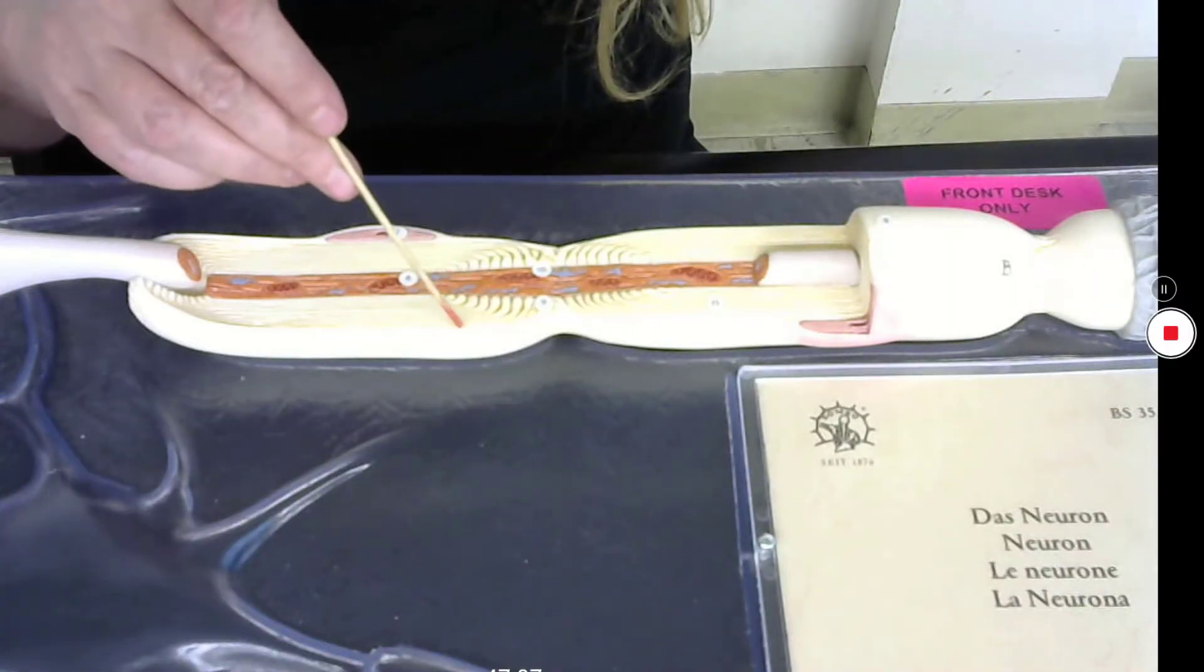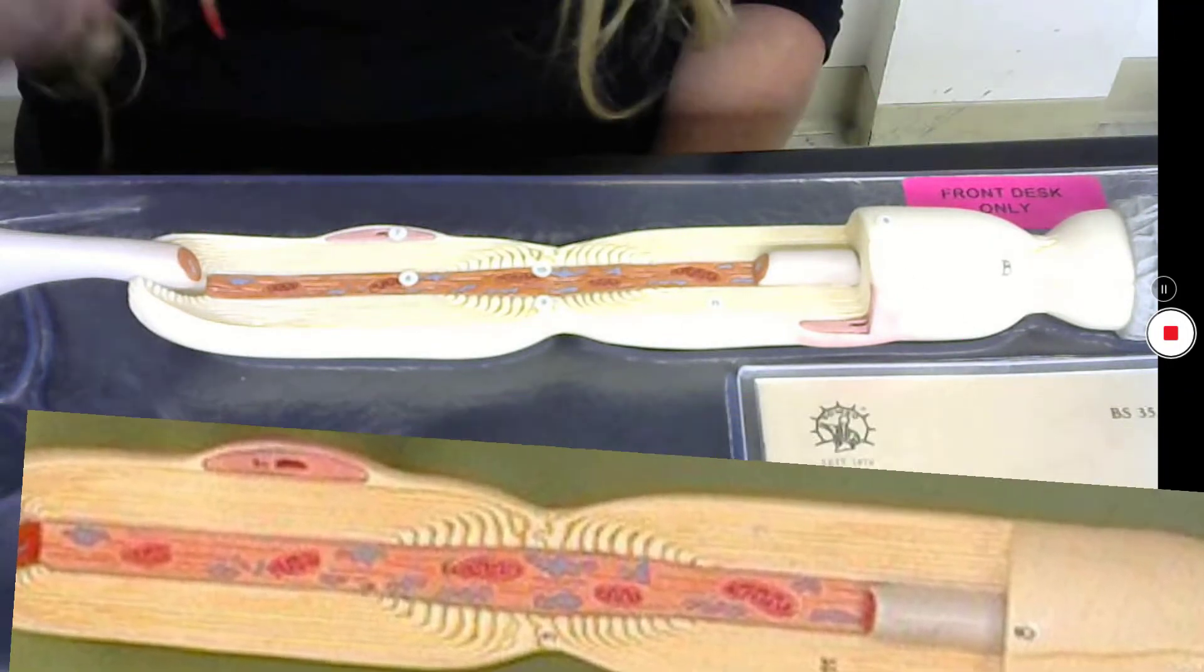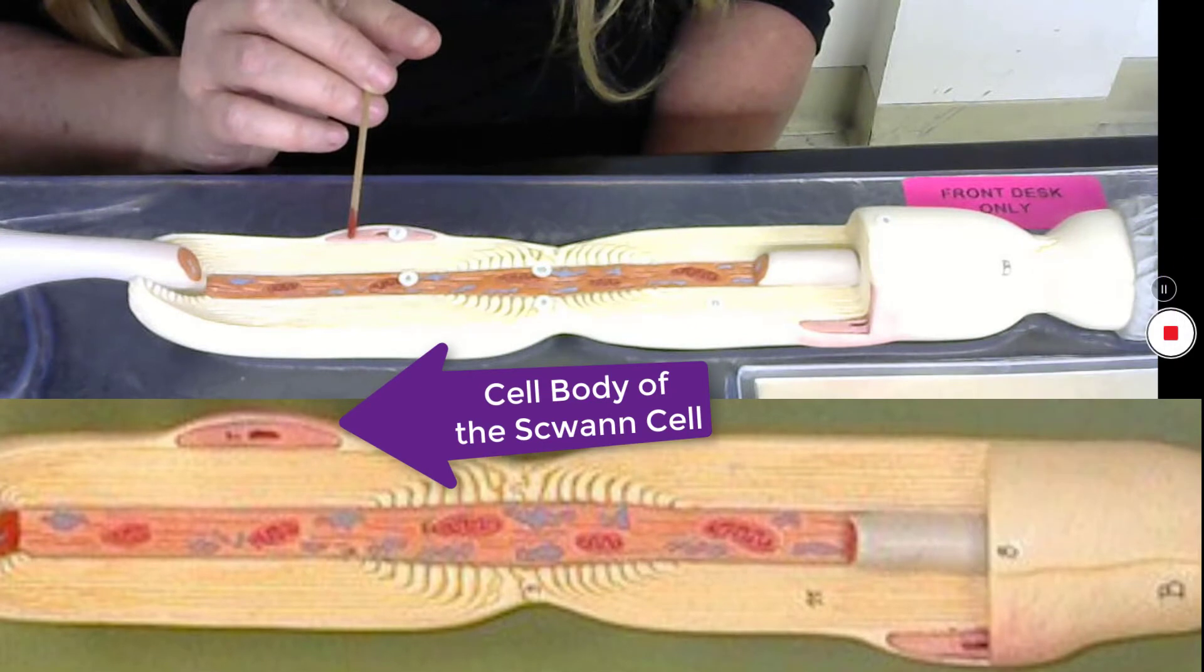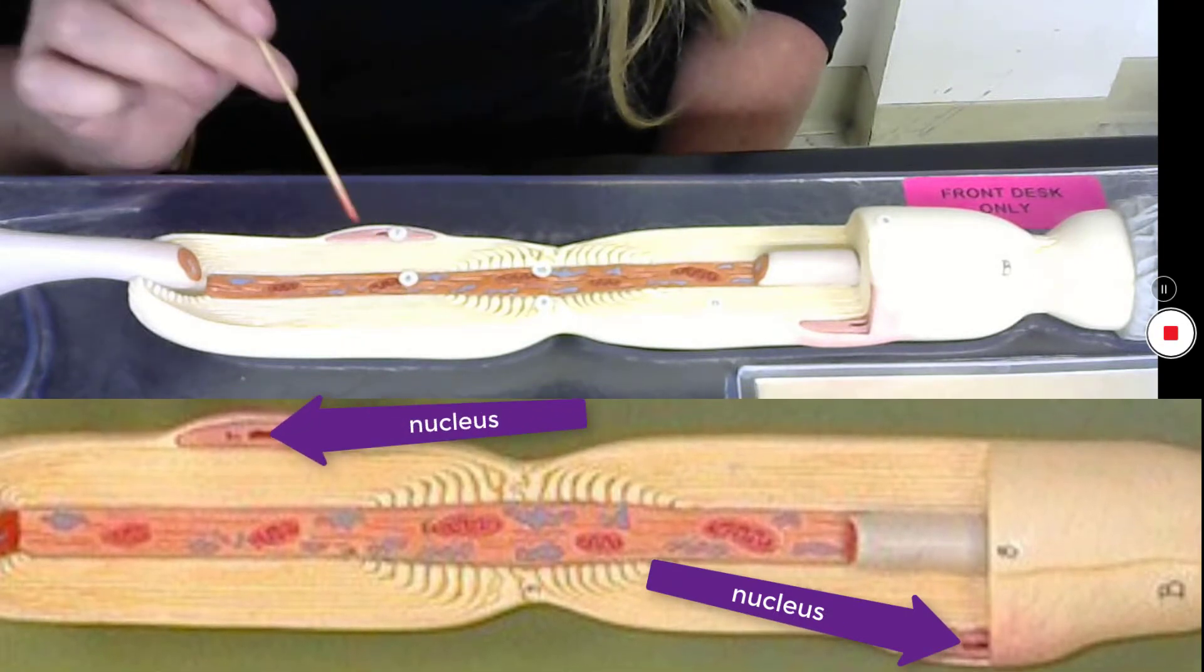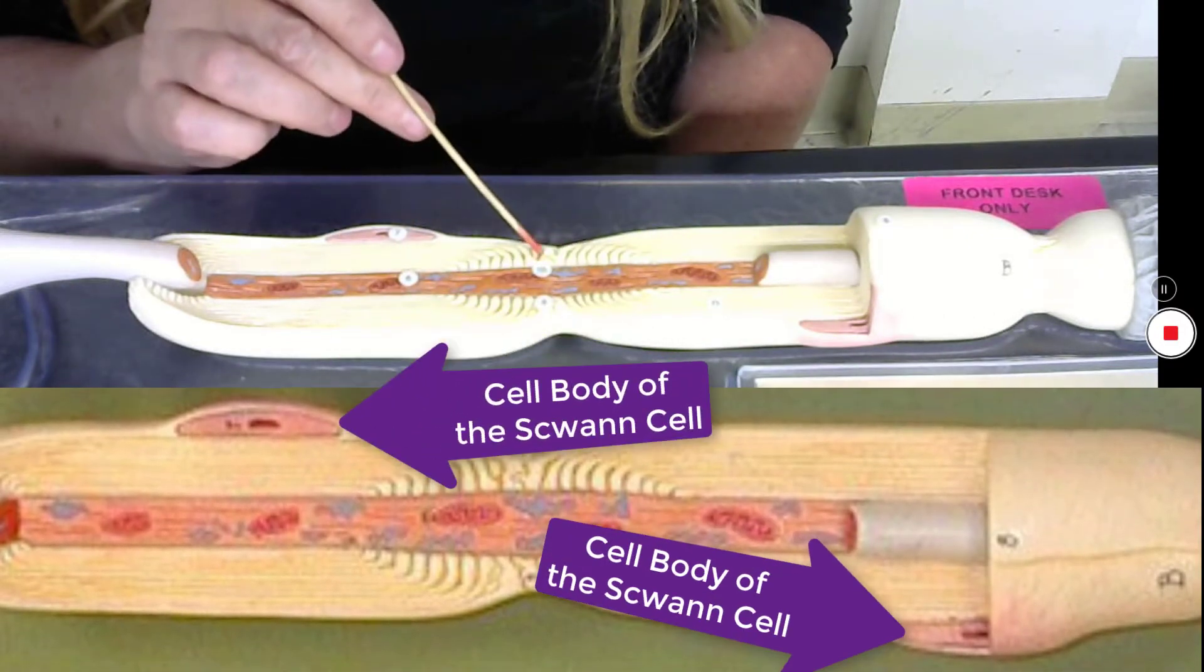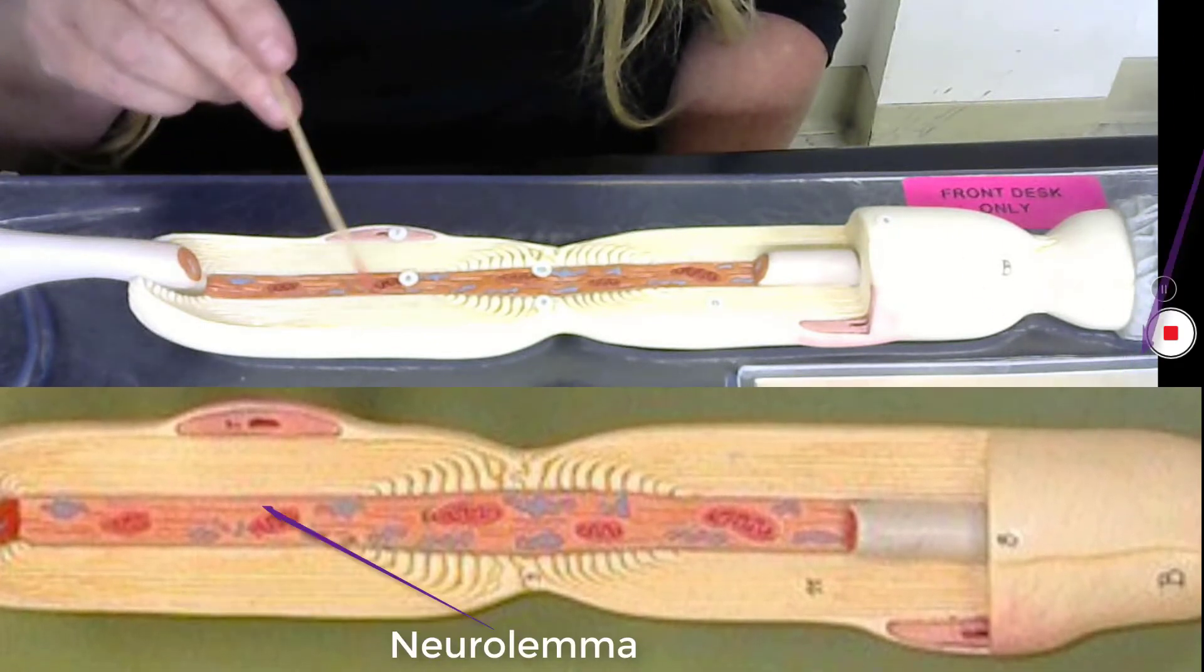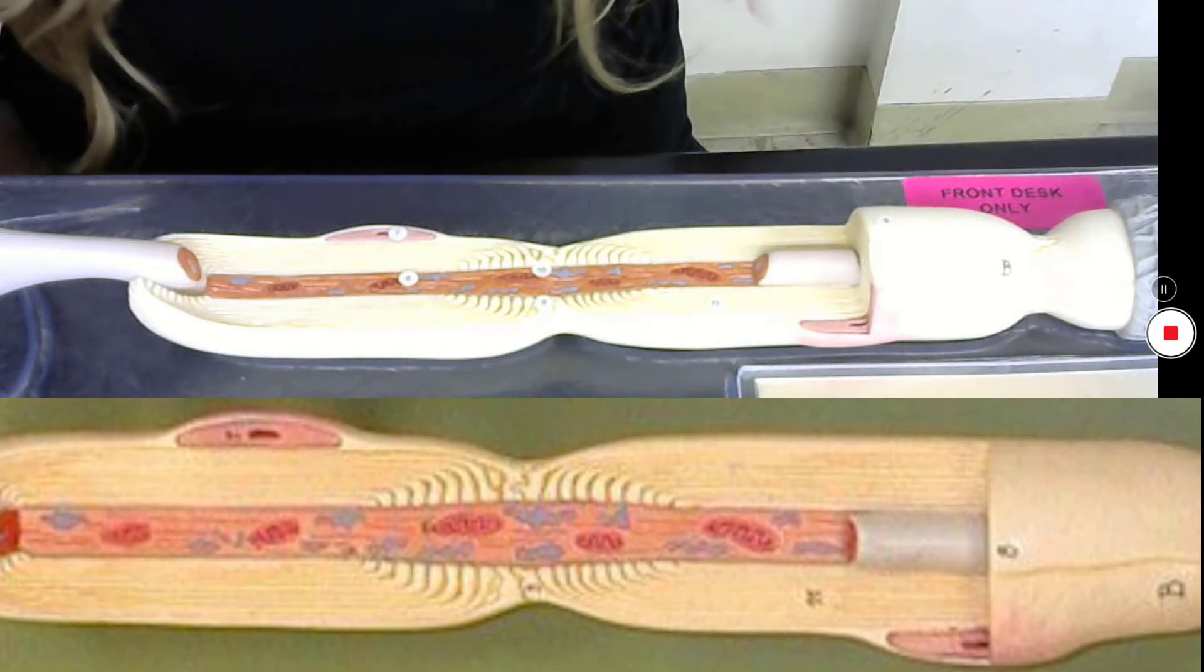Outer layer of the myelin sheath is the neurolemma, and in this model, we can see that we have the cell bodies of the Schwann cells that are making up the structure of the myelin sheath, and I have the nucleus of the cell body of the Schwann cell. The cell bodies of the Schwann cells are going to be on the outer layer of the myelin sheath, which we call the neurolemma, and all of these layers are layers of myelin sheath. And this is all made up using the structure of Schwann cells in the peripheral nervous system.